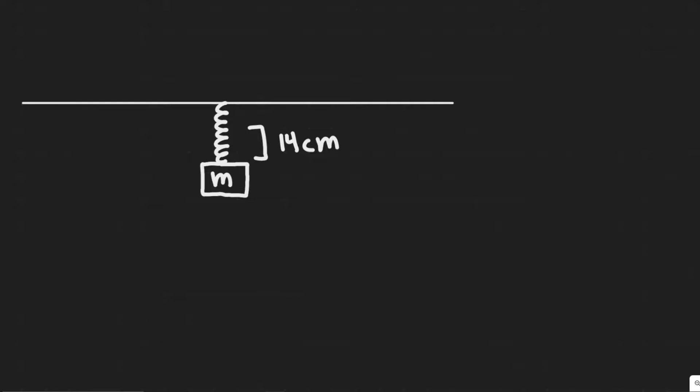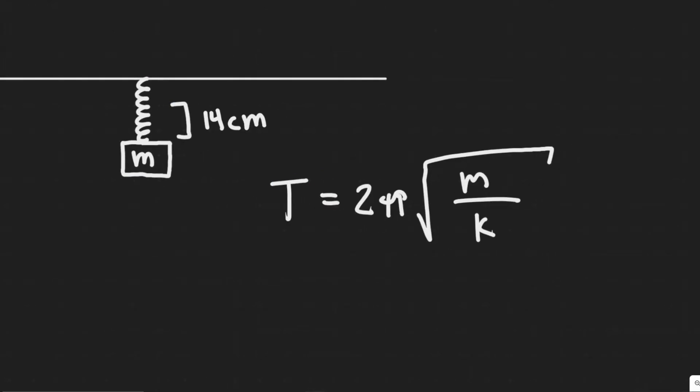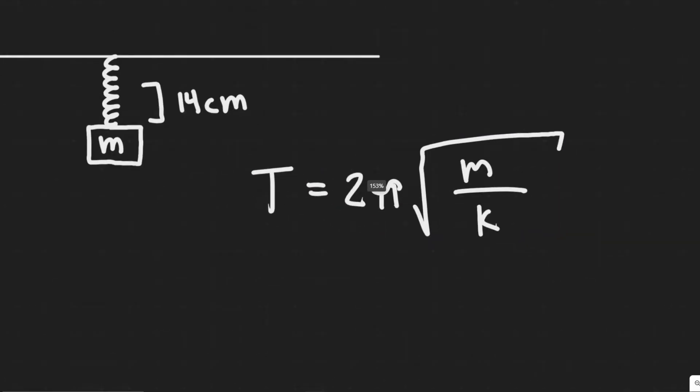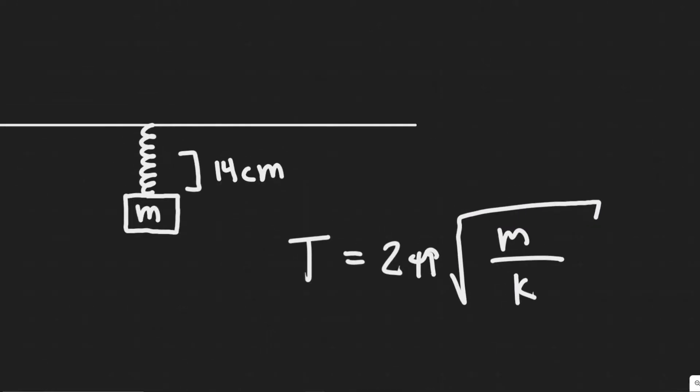So in this problem we're going to be solving for the period T. You need to know the formula: it equals 2π multiplied by the square root of m over k. So m is obviously the mass of our thing, and then k is going to be the spring constant of our spring here.